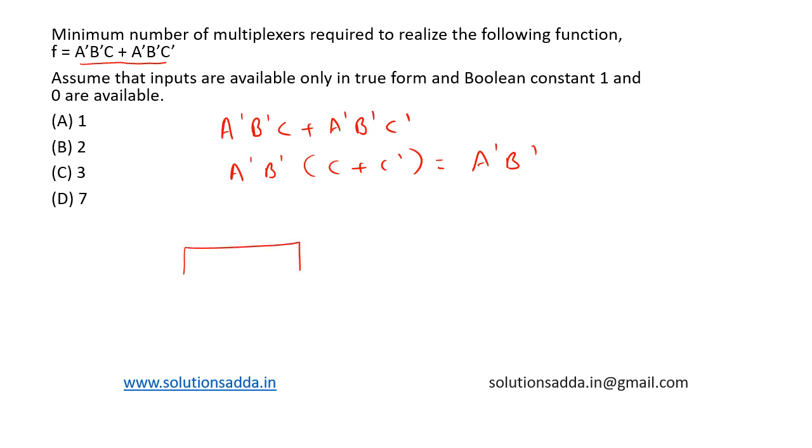Using the first multiplexer with A as the select input, we pass 1 to input I0 and 0 to input I1. This outputs A', which becomes the input of the next multiplexer.